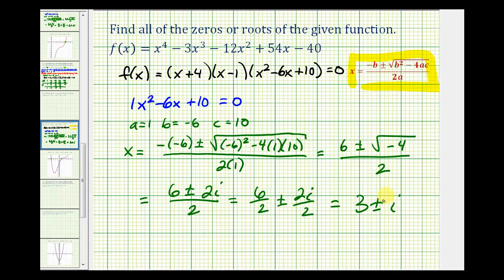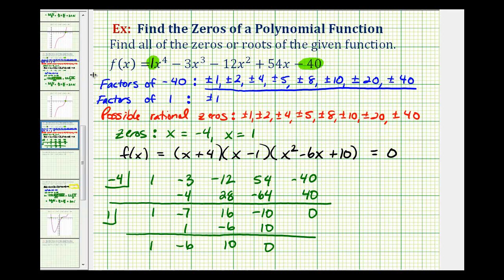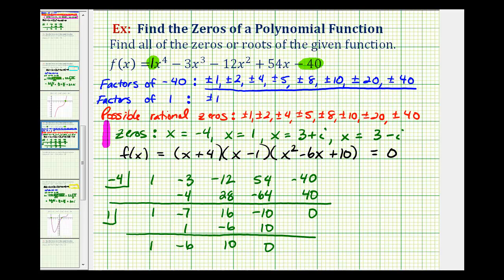These are the two remaining zeros, and notice we have two complex zeros as expected. So going back to the full solution: the four zeros of the original degree four polynomial function are x equals negative four, x equals positive one, x equals three plus i, and x equals three minus i.